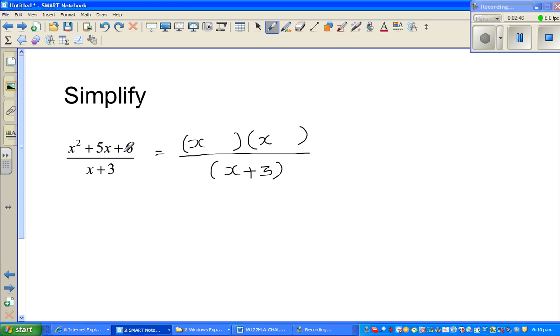And everything is plus, so you don't have to worry about the signs—you can put a plus and a plus. Think of two numbers or two factors of 6 which add to give you 5. So 6—the two factors which add to give you 6 are 1 and 6. If you add them, 1 plus 6 is 7.